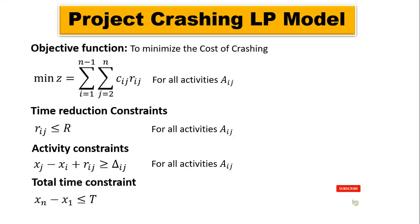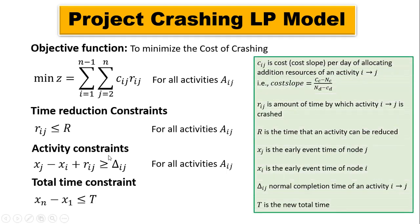To start with, let's see the general project crashing LP model. The general project crash LP model consists of four main parts: the objective function, the cost reduction, the constraint, and the total time constraint. The variables for the objective function and the other constraints are described in the right-hand box, so you can go through that and get the meaning of each variable used in the LP model for project crashing.